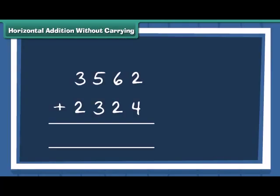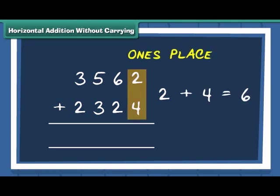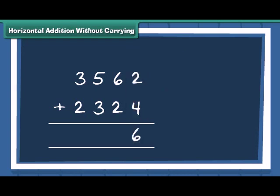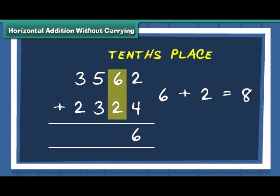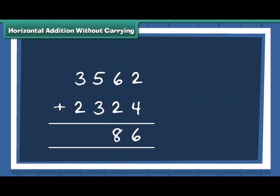We have the 2 numbers, 3562 and 2324 which are written as shown. Now we first add numbers at one's place. Next, we move to numbers at ten's place. Then add the numbers at hundred's place and finally the numbers at thousand's place are added.